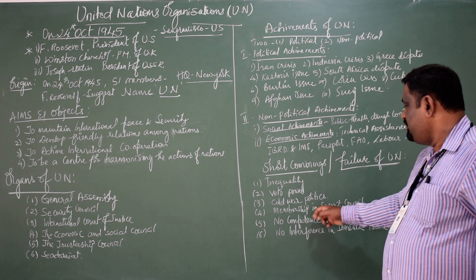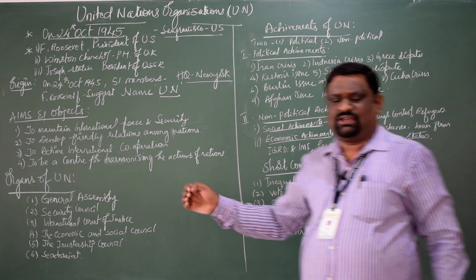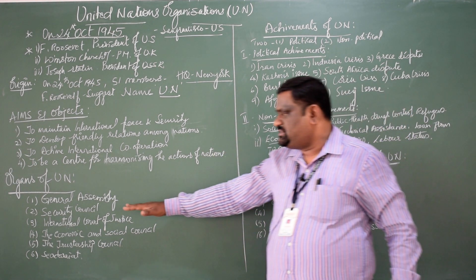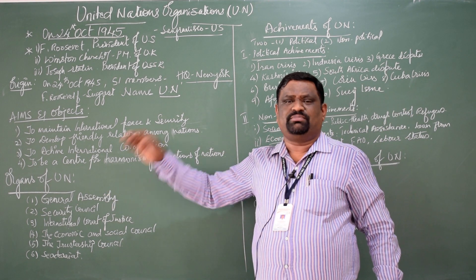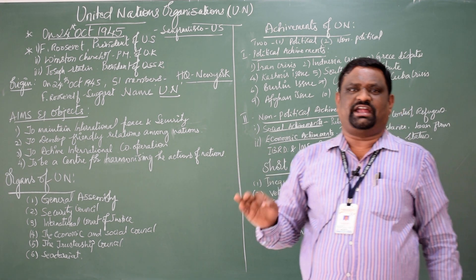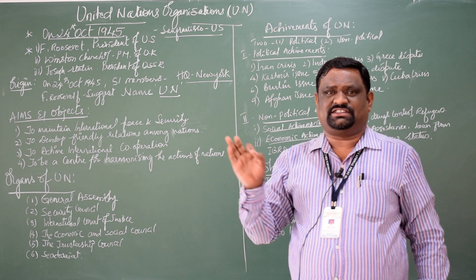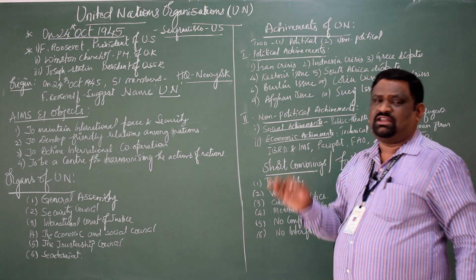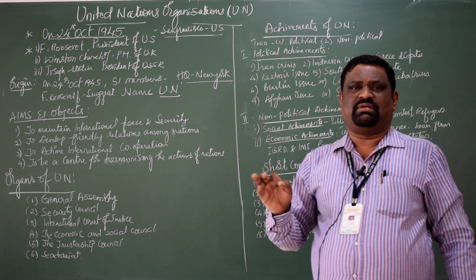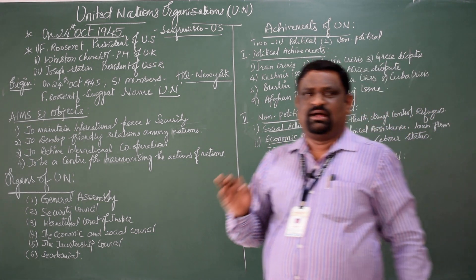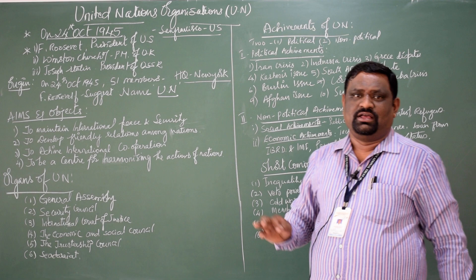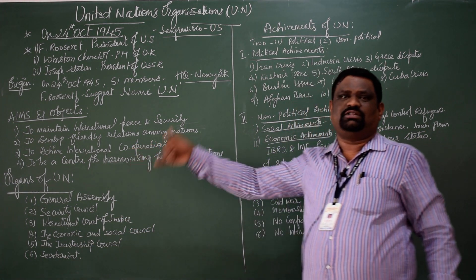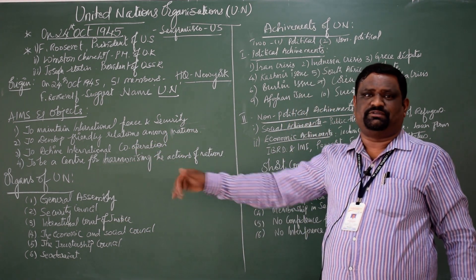The fourth failure is membership in the Security Council. Unless the Security Council approves, other member countries cannot get the permanent membership. The Security Council is happy to allow any member into the UN, but they are not allowing any member country to obtain veto power or permanent membership of the Security Council, and this leads to politics among countries.